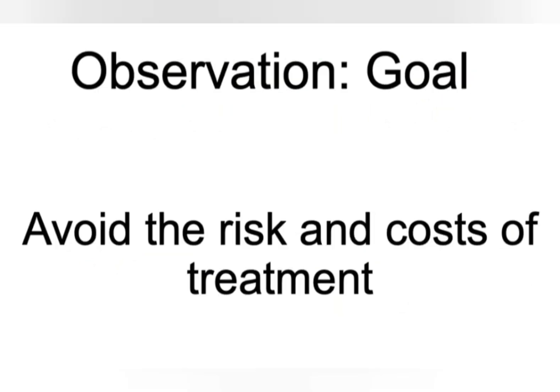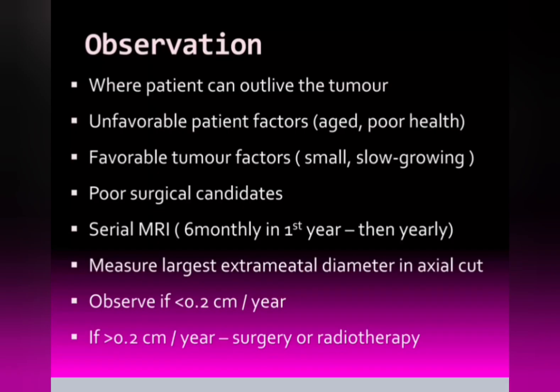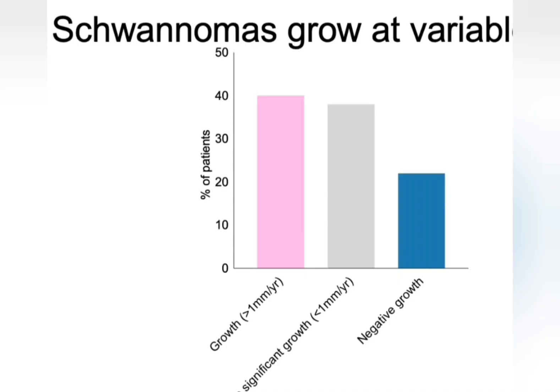Observation is done to avoid the risk of surgery and the associated costs. The rate of tumour growth is very, very slow, so serial MRI — yearly or six-monthly — is performed. If the tumour is growing less than one millimetre per year, observation is appropriate. Also, if the patient is elderly and there are health risks associated with surgery or radiation, serial MRI and observation is preferred.